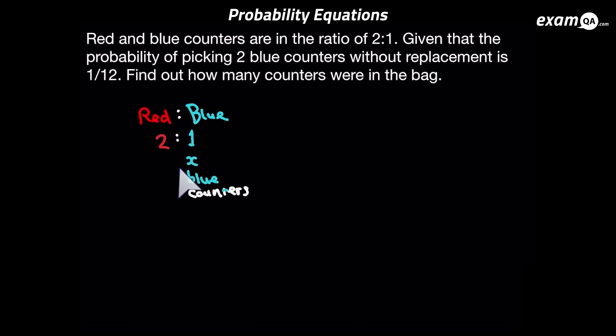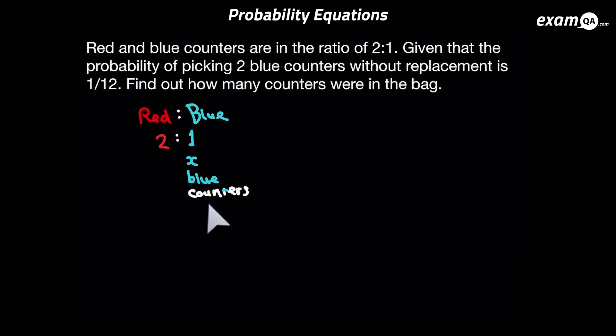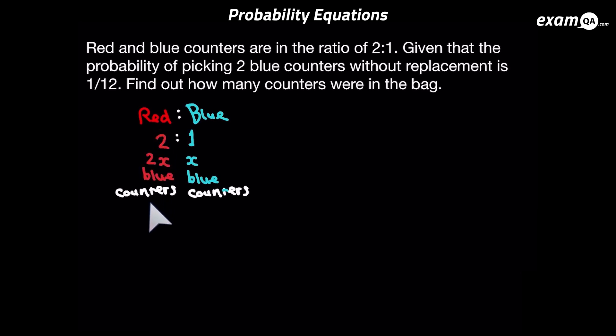We're going to start by saying there's x amount of blue counters. And of course if there's x amount of blue counters, there's twice as many red counters, so there will be 2x amount of red counters. It's important that we do this first because when we're making our probability equation we need to be talking about number of counters.